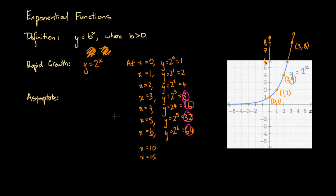The other interesting feature of exponential functions is that they have an asymptote. Let's have a look at the left portion of this graph — the portion left of the origin. It looks as if this graph goes straight to y equals 0, but that's not actually the case. At no point does this graph actually touch the x-axis. In fact, it is decreasing, but we never get a y coordinate of 0.